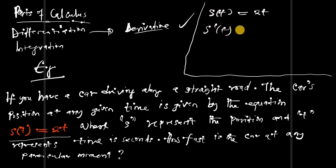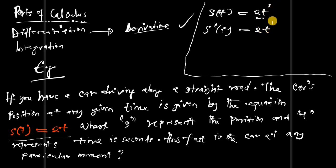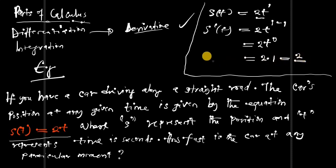How fast is the car at any particular moment? To find this, we find the derivative of the position function. We have s(t) = 2t. Finding the derivative, s′(t): t is to the power of 1, so we multiply that power by the coefficient 2, giving 1 × 2 = 2, and then subtract 1 from the exponent, giving t to the power of 0, which equals 1. So s′(t) = 2 × 1 = 2. The derivative tells us that the car is moving at a constant speed of 2 units per second.